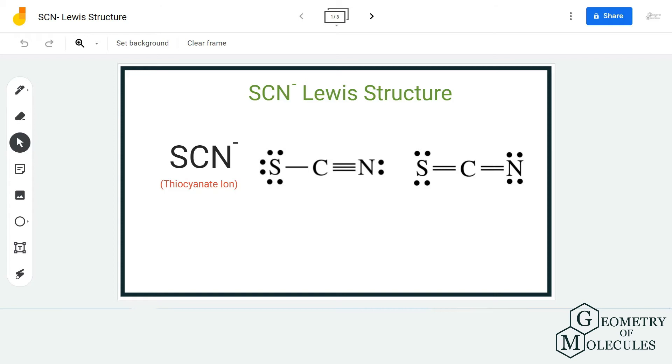Hi guys, welcome back to our channel. In today's video we are going to help you determine the Lewis structure for SCN minus ion. It has a chemical name of thiocyanate ion.